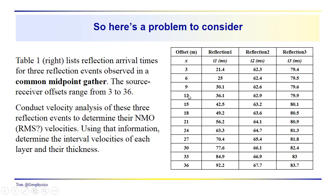So you'll see that we have source receiver offsets going from 3 to 36 meters, three meters between each geophone, and they're in a common midpoint gather. Notice that the offsets here are just incremented by three meters each time.